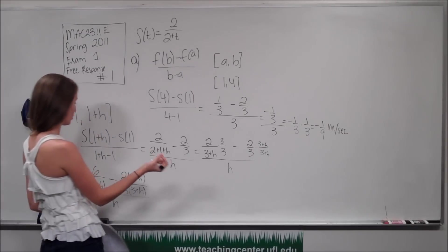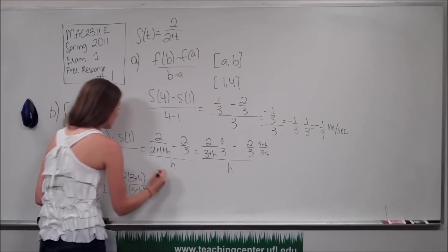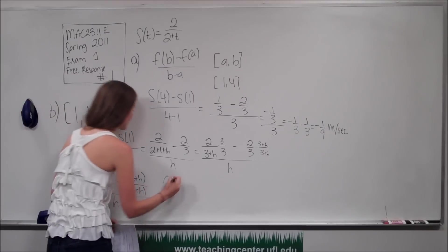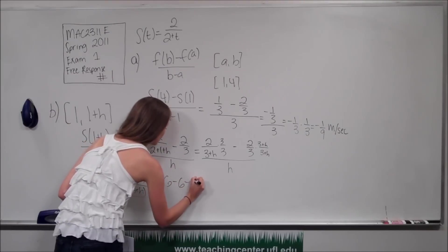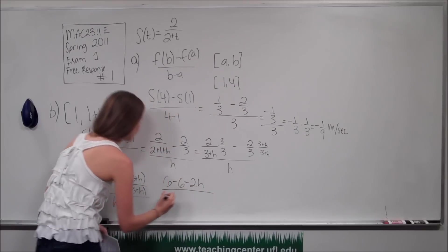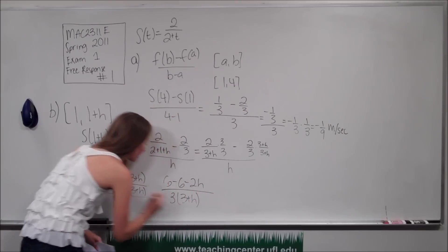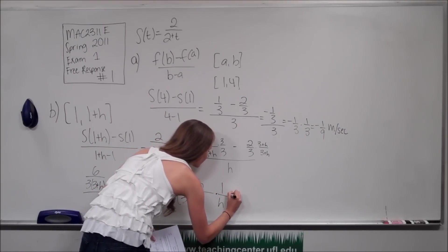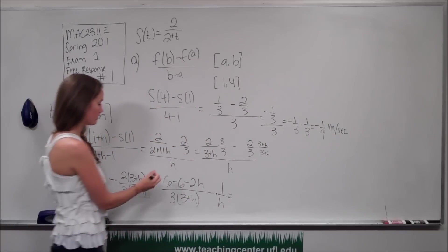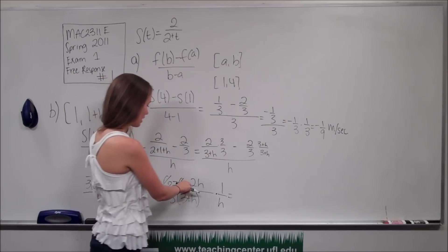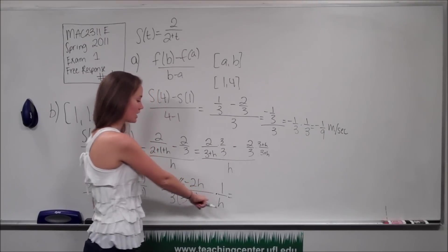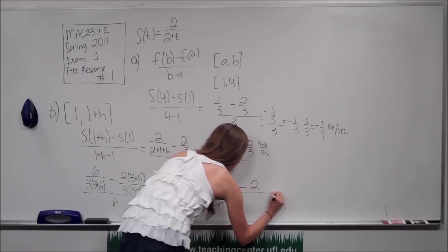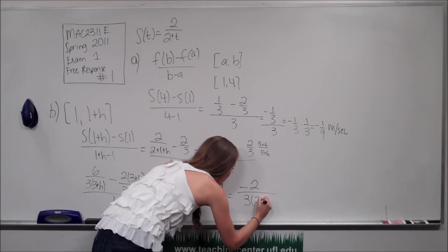Now we combine into one single fraction: 6 minus — distributing the minus 2 — gives us 6 minus 6 minus 2h all over 3 times 3 plus h, and that's all over h. We can multiply by 1 over h. The 6 minus 6 cancels out, and the h on top cancels with the h on the bottom, leaving us with just negative 2 all over 3 times 3 plus h.